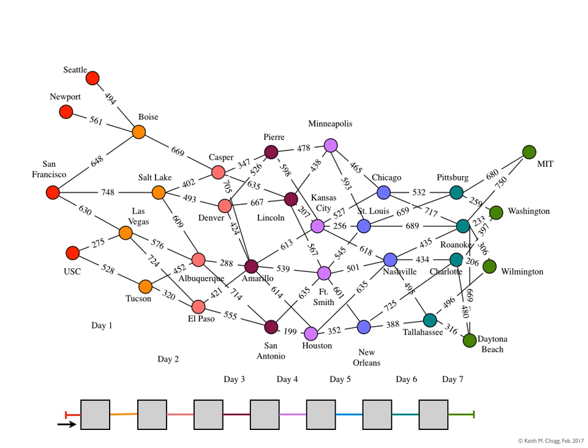This diagram is called a trellis diagram in the context of Viterbi decoding. It's basically a diagram that shows all the possible routes you could take from the west coast to the east coast under this 750 miles a day or less constraint.